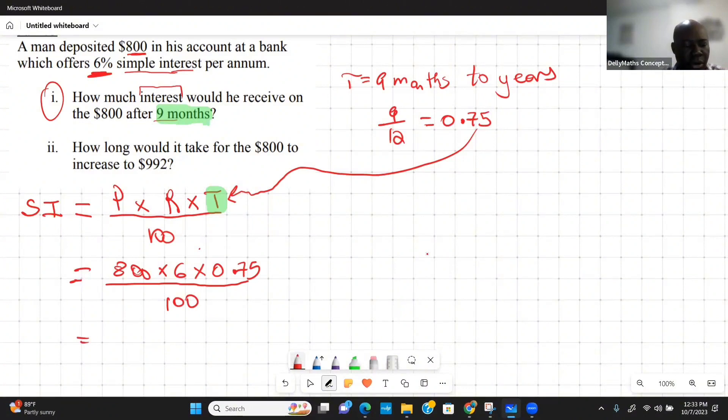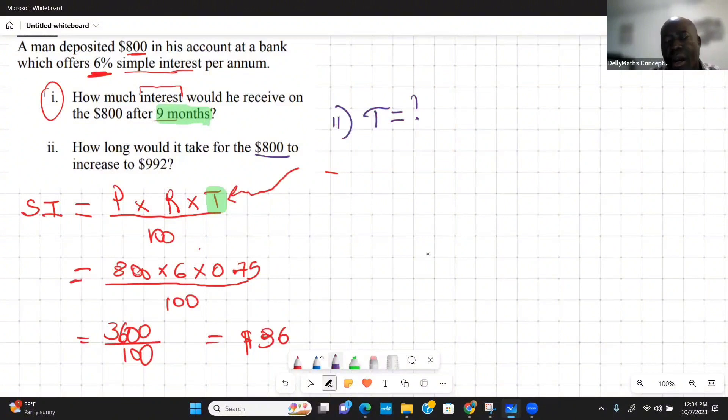So this is all we need to do. Put this on our calculator and the answer will come up. Let's see what we get. It's going to be 800 times 6 times 0.75, we're going to get 3600, divide this by 100, and it is telling us that the simple interest is $36.